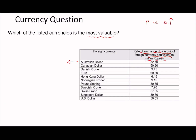One Australian dollar gives you 52.7 Indian rupees, one euro gives you 69.8 Indian rupees, but pound sterling gives you the highest amount at 80.35 rupees. So the answer is pound sterling — it's the most valuable. Quite a nice one to start off with.